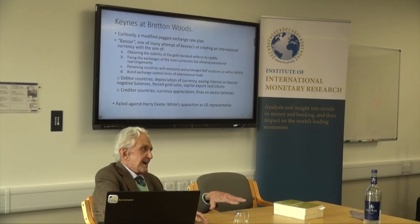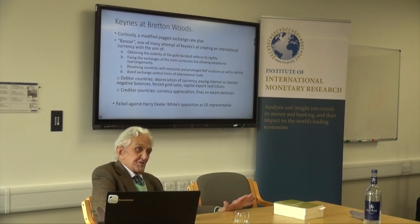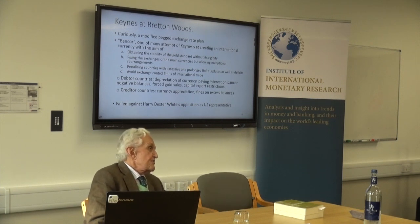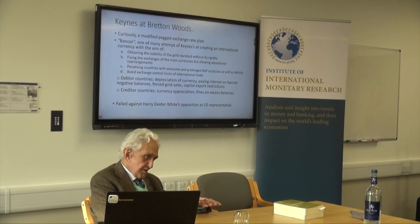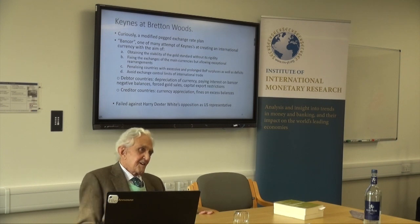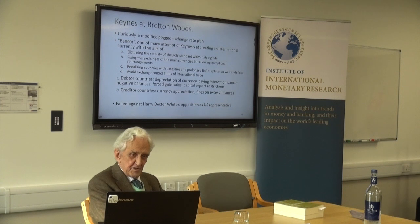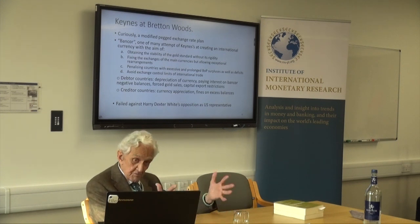Keynes tried to have a gold standard system without the gold standard's bad things - you were on the gold standard, but if your balance of payments went deep into negative territory, then you could devalue. So it was: 'I promise I will keep the exchange rate fixed, but you always have a back door to devalue if necessary.' He wanted to obtain the stability of the gold standard without the rigidity of the gold standard. Fixing the exchange of the main currency allowed for exceptional rearrangement - that was the proposal he took to Bretton Woods.